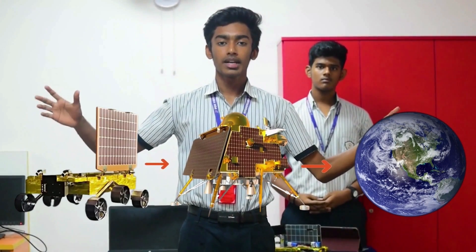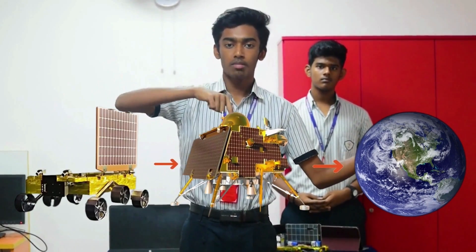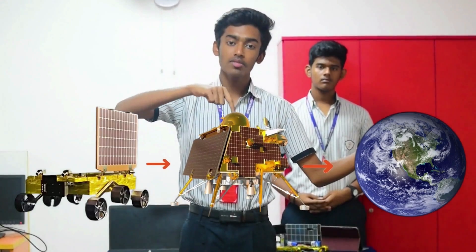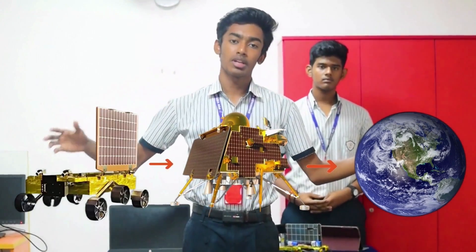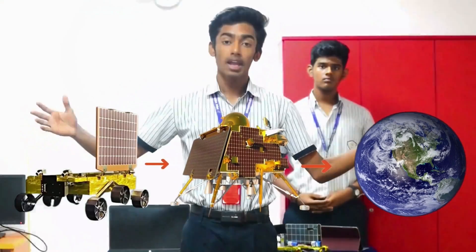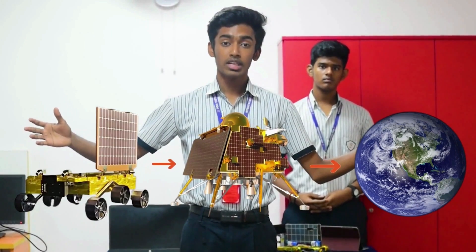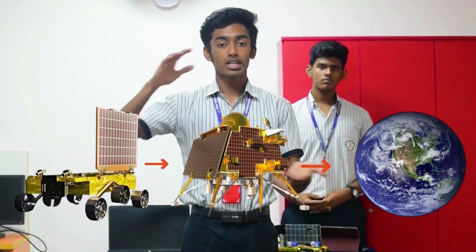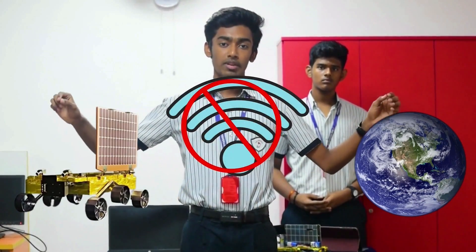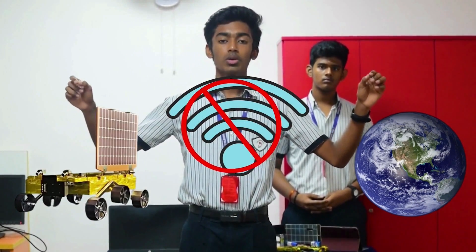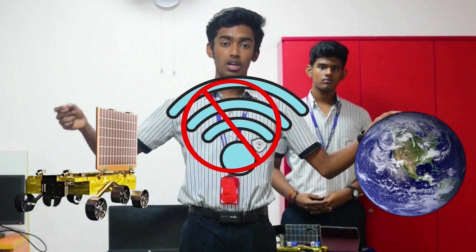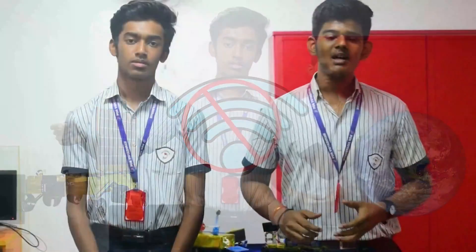The data collected by the Pragyan rover is sent to the Vikram lander, and only the Vikram lander sends the data to the Earth. But after the hibernation period, due to extreme cold, the Vikram lander was totally destroyed. Now there is no connection between the Pragyan rover and Earth, and we could not establish a connection between them. But perhaps we have a solution for the problem faced by ISRO scientists.